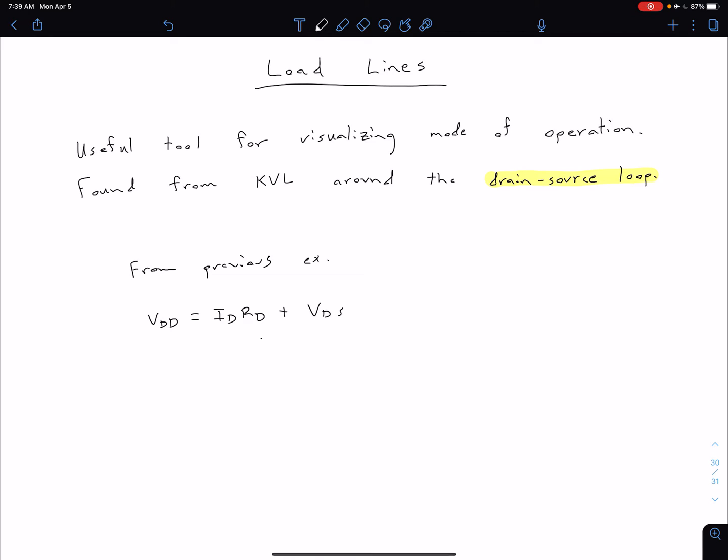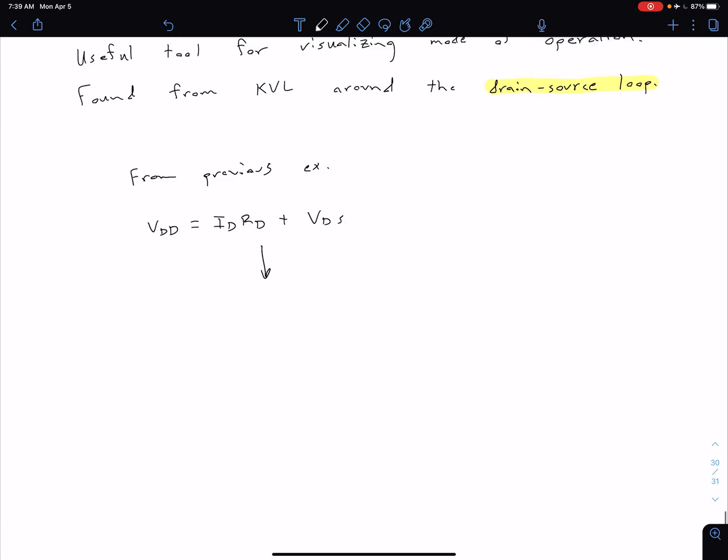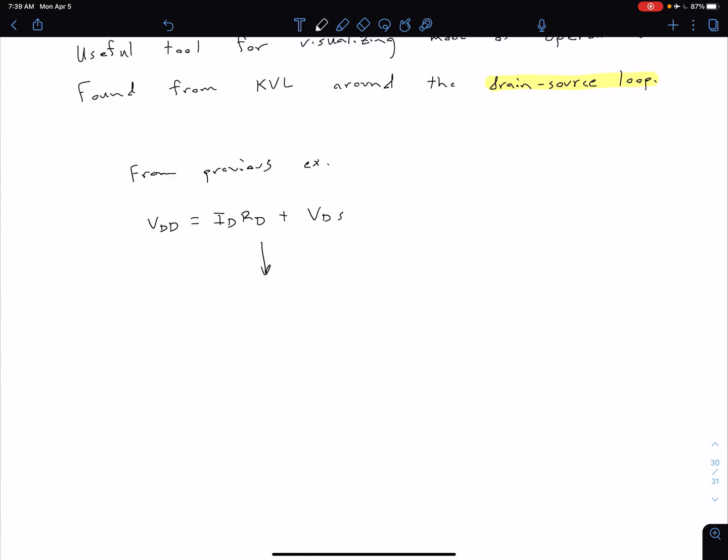What we can do is rearrange this equation to be in point-slope form. We can say that our drain current ID is equal to negative 1 over RD times our VDS plus VDD divided by RD. Now with this being in point-slope form, we recognize that this term in parentheses is the slope of our line, and this term is our Y-intercept.